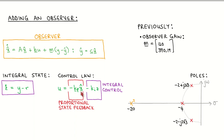We have previously designed an observer for the plant with a specific observer gain. The two observer poles are both located at minus 20. The observer poles are five times faster in natural frequency than the closed-loop poles, which is fast enough, so we reuse this observer design.